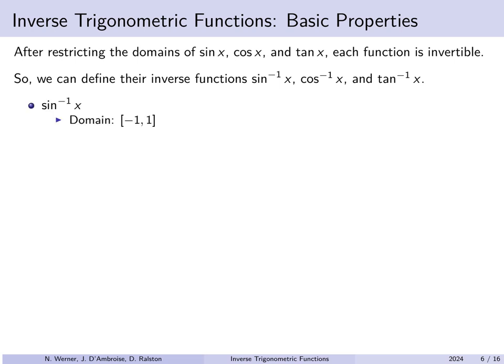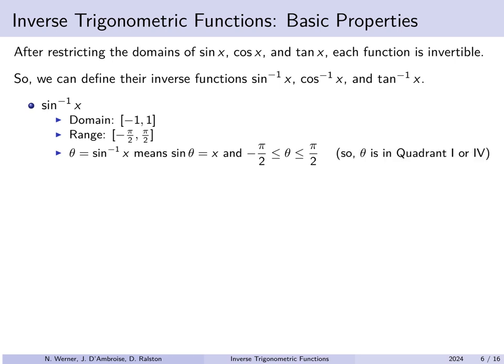The domain of the inverse sine function is the range of our restricted sine function, which was from minus 1 to 1. Conversely, the range of the arc sine function is the domain of our restricted sine function — minus pi over 2 to pi over 2. So if we say theta is the arc sine of x, what we mean is that theta is an angle whose sine is x, specifically an angle between minus pi over 2 and positive pi over 2, meaning the angle must be in quadrant 1 or 4.